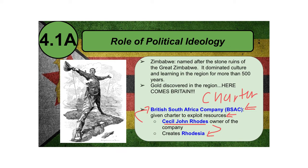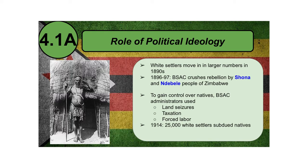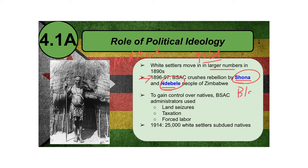The nation of Zimbabwe used to be called Rhodesia, named after a white man from England. With the massive arrival of more white settlers due to the discovery of gold and other resources in the 1890s, the BSAC — which had its own militia — crushed several rebellions by the Shona and Ndebele people of Zimbabwe. These two groups are the two dominant culture groups within Zimbabwe, and they were brutally crushed by the white military run by BSAC.